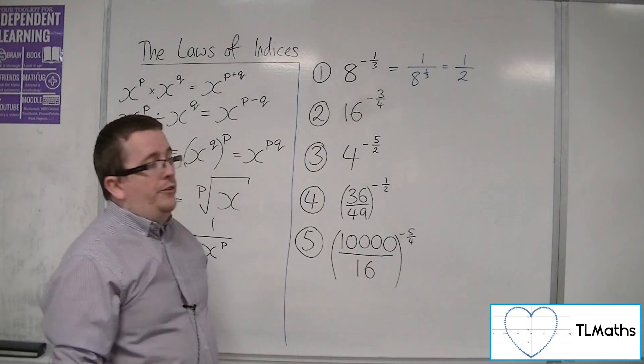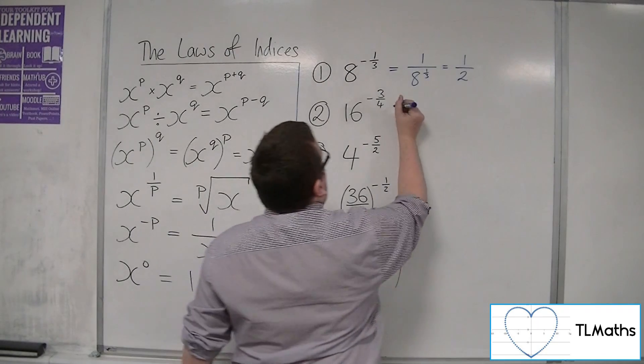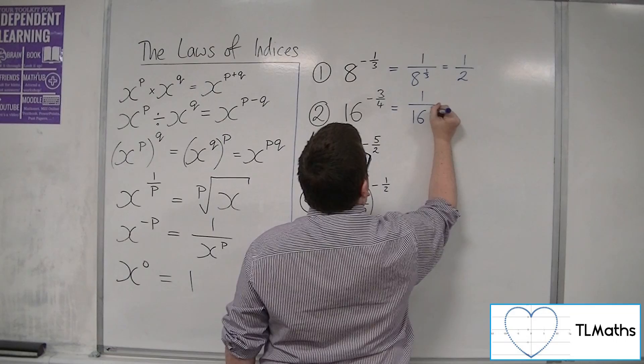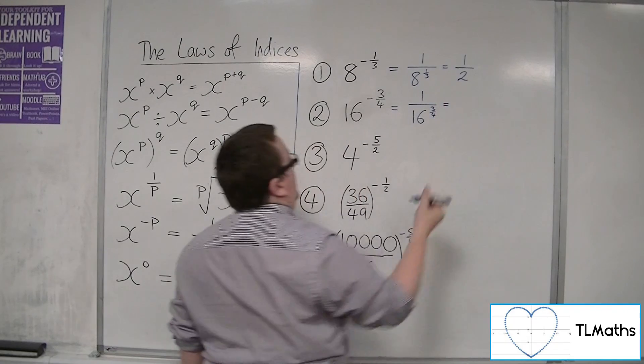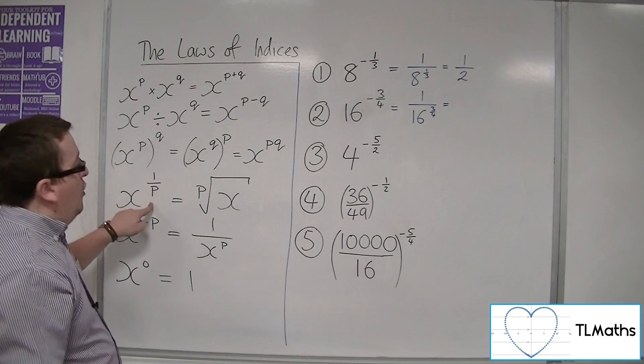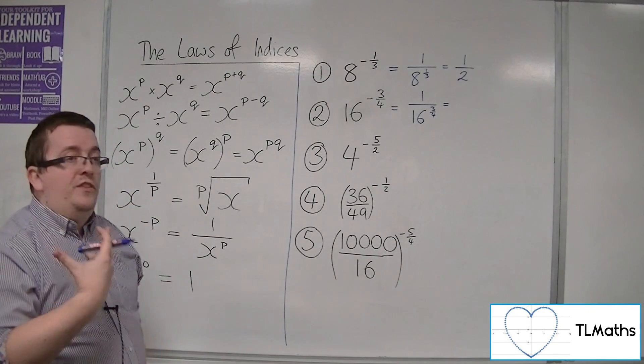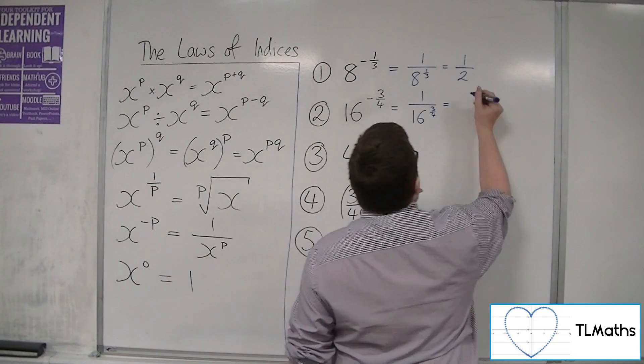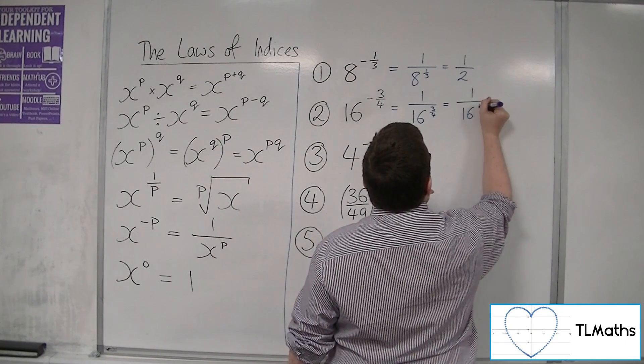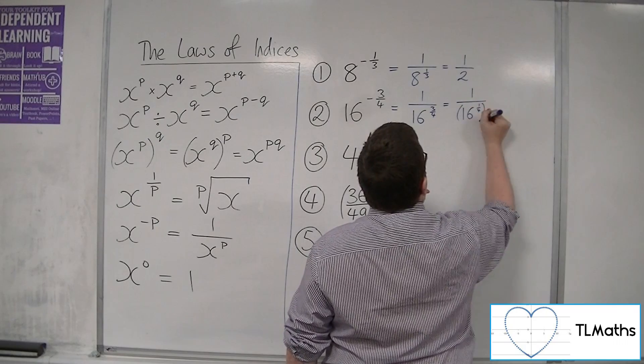16 to the minus 3 quarters. I'm going to write as 1 over 16 to the 3 quarters first. Now when I've got a fraction in the index where it's not 1 over, I'm going to deal with the root first. So I'm going to write this as 1 over 16 to the quarter cubed.